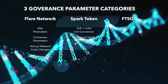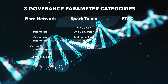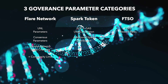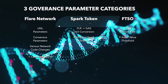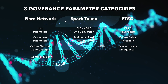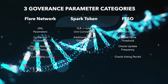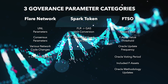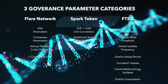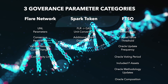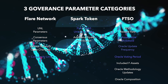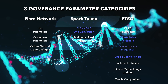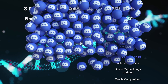Finally, holders of the Spark token can vote on various changes to the Flare Time Series Oracle. These include the FTSO reward rate, the F-asset value threshold, Oracle update frequency, Oracle voting period, F-asset inclusion, Oracle methodology updates, and changing Oracle series composition. Some of these decisions can be automated, which I have highlighted in blue. These particular decisions can be implemented much faster than those shown in white, which will require a code change and therefore deployment to nodes.